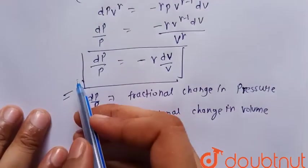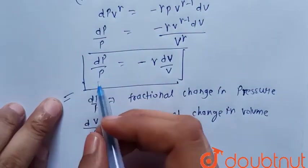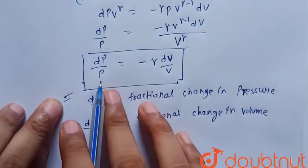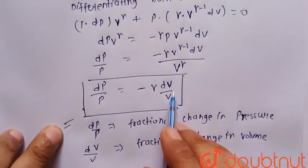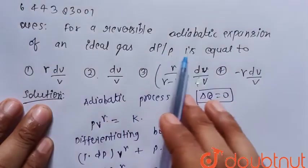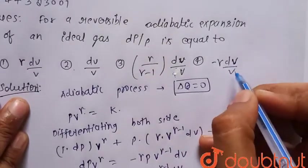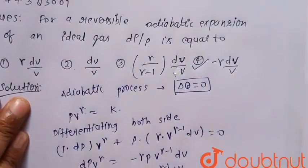So the correct value of dP upon P is equal to minus gamma dV upon V. Hence, for reversible adiabatic expansion of an ideal gas, dP upon P is equal to minus gamma dV upon V. Hence option 4 is the correct choice.